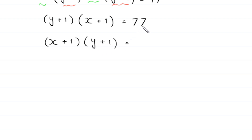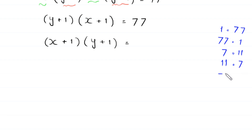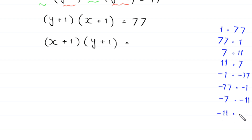Since we have two factors on the left-hand side, we factorize 77 as: 1 times 77, 77 times 1, 7 times 11, 11 times 7, negative 1 times negative 77, negative 77 times negative 1, negative 7 times negative 11, and negative 11 times negative 7. This gives us four cases.